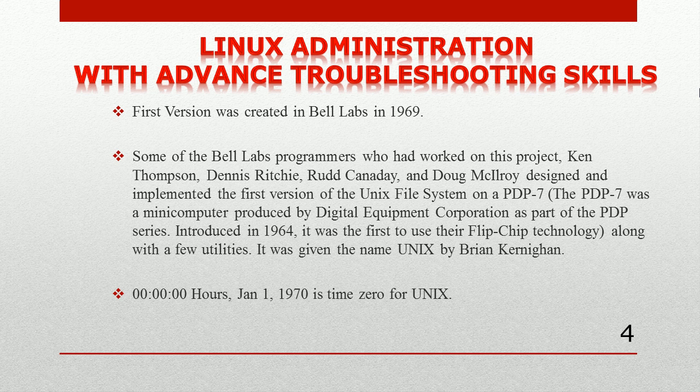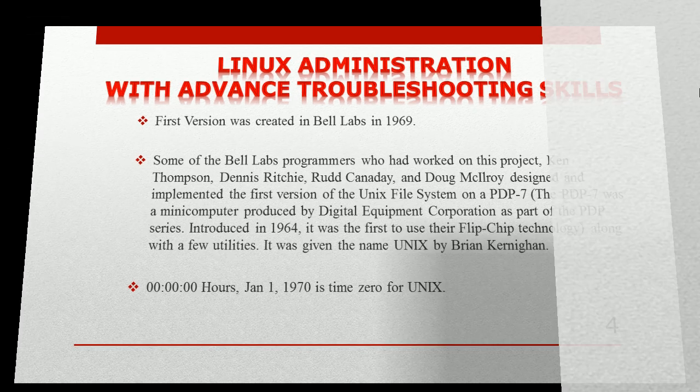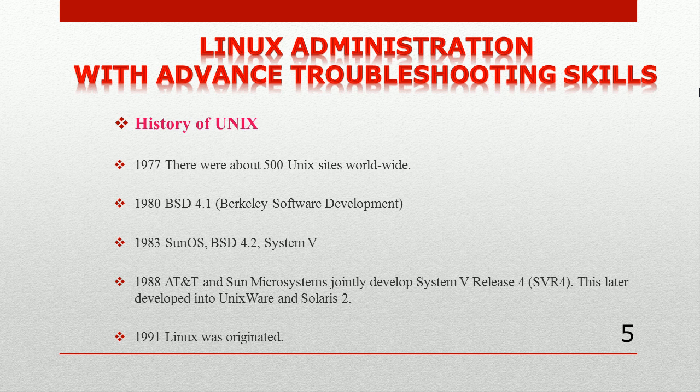January 1, 1970 is considered the zero time — the epoch — for UNIX. Looking at the UNIX timeline: by 1977 there were only 500 UNIX sites worldwide; in 1980 BSD 4.1 was released by Berkeley Software Distribution; in 1983 Sun OS was introduced; in 1988 AT&T and Microsoft jointly developed System V release; and in 1991 Linux originated.